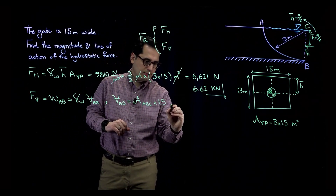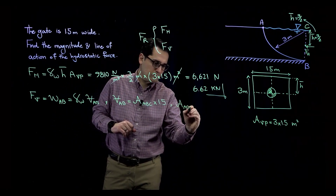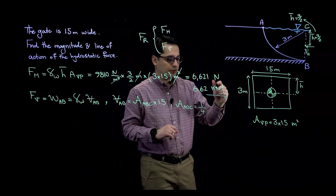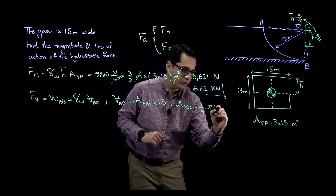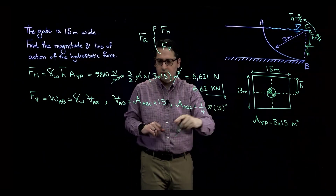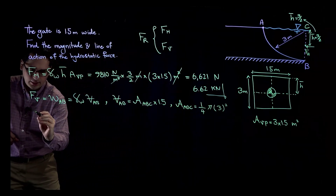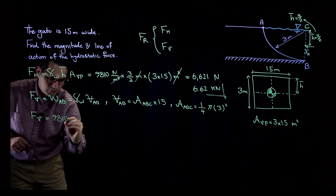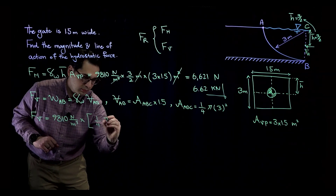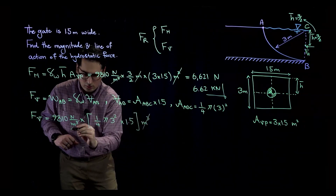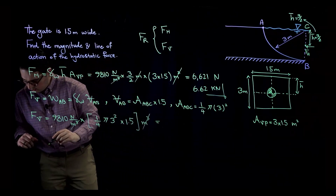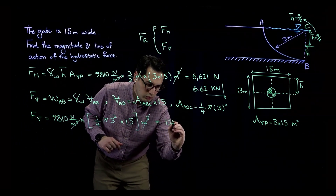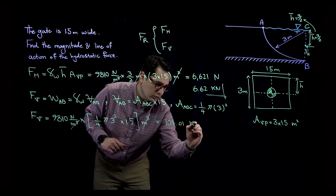The area of ABC is one-fourth of pi r squared, with radius r = 3 meters. Putting this into the vertical force equation and converting to kilonewtons gives F sub V = 104.01 kilonewtons.